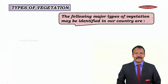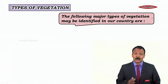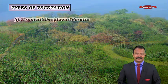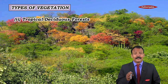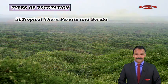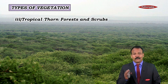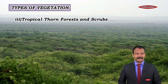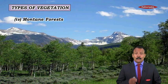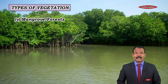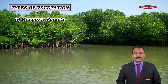The following are the major types of vegetation found in our country: tropical evergreen forests, tropical deciduous forests, tropical thorn forests and scrubs, mountain forests, and mangrove forests.